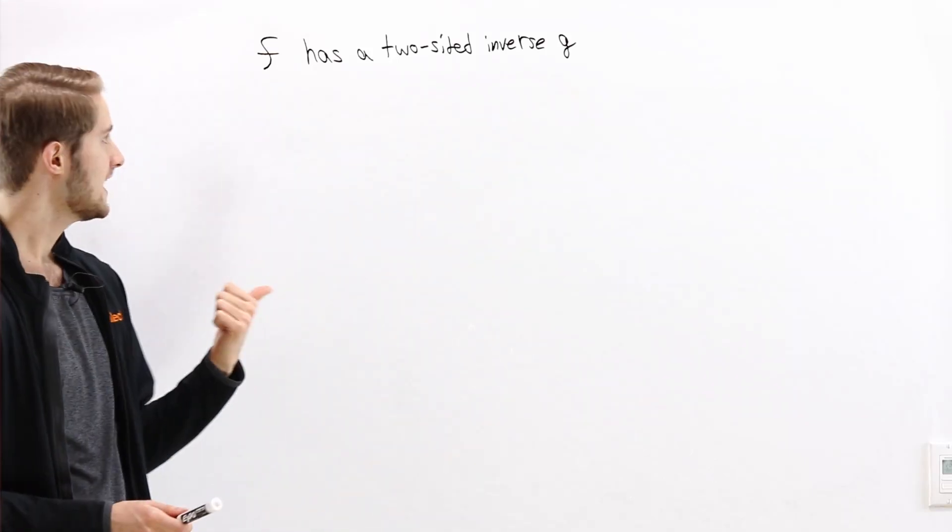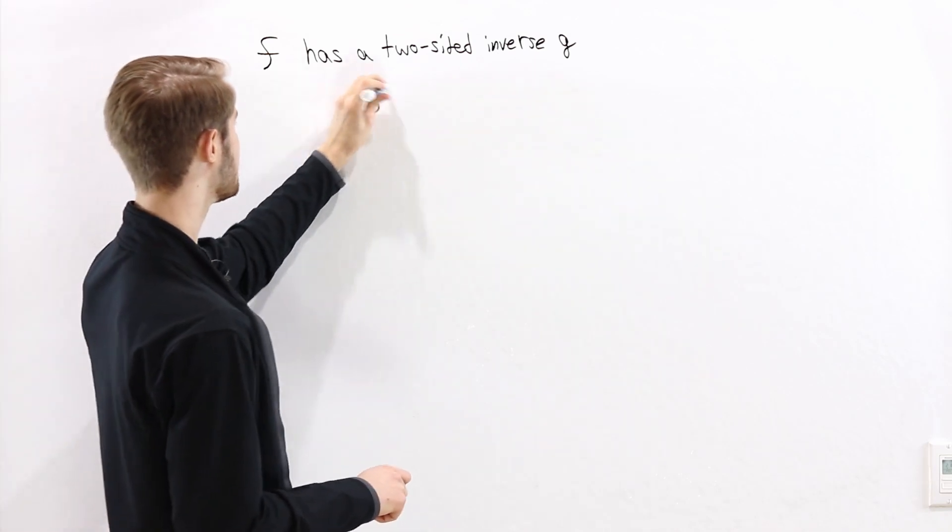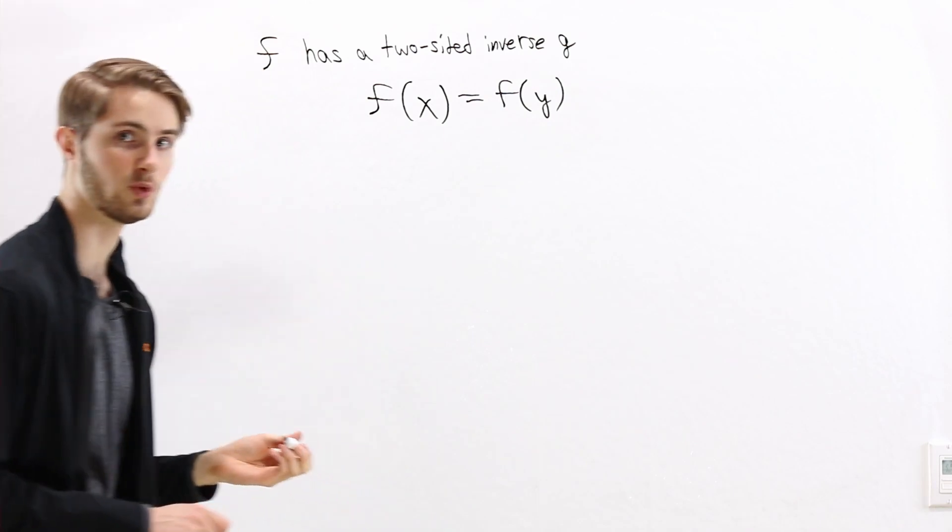Let's say that some function f has a two-sided inverse function g, and let's suppose that for two different inputs, x and y, we have f of x equals f of y.